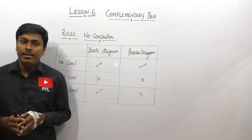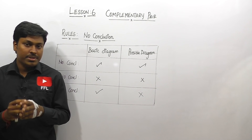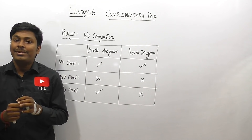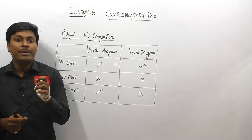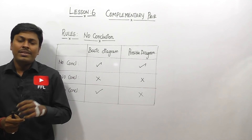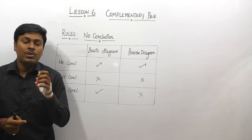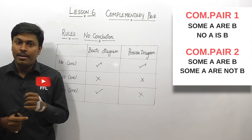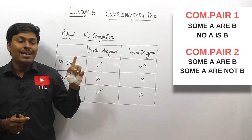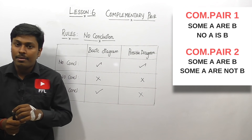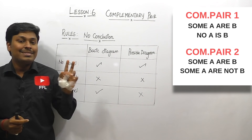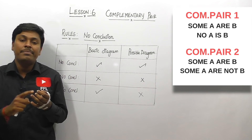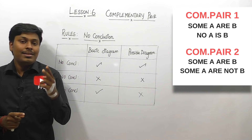Welcome to this YouTube channel. In lesson number six on the topic of syllogism, we are going to see the complementary pair concept. In syllogism there are two major complementary pairs: the first is 'Some A or B' and 'No A is B', and the second complementary pair is 'Some A or B' and 'Some A or not B'.